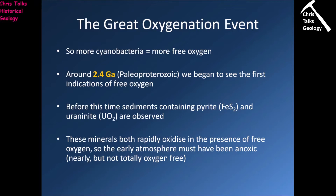As we've already discussed, we are going to see a steady increase in the amount of atmospheric oxygen as we move through the Proterozoic. This increase in oxygen is primarily due to an increase in the number of photosynthesizing cyanobacteria. The more of these organisms we have, the more oxygen is going to be produced as a by-product, eventually leading to what we refer to as the Great Oxygenation Event.